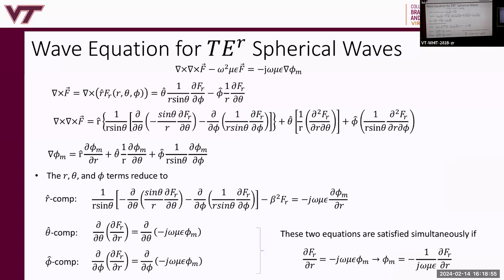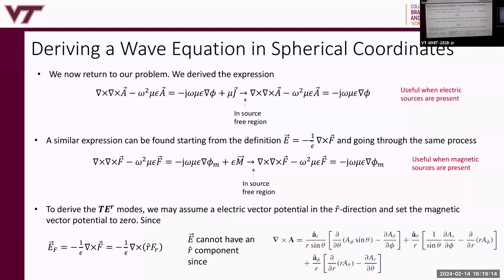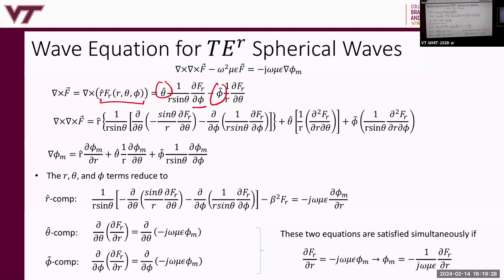We derive a wave equation for TE-to-R spherical waves starting from our differential equation. Since F has only an R component, we expand the curl of F: it has only theta and phi components involving partial derivatives of F_R with respect to phi and theta. Taking the curl of that result gives the curl of the curl of F, which picks up R, theta, and phi components. We also need the gradient of phi_M in spherical coordinates, and we match components through the vector equality.